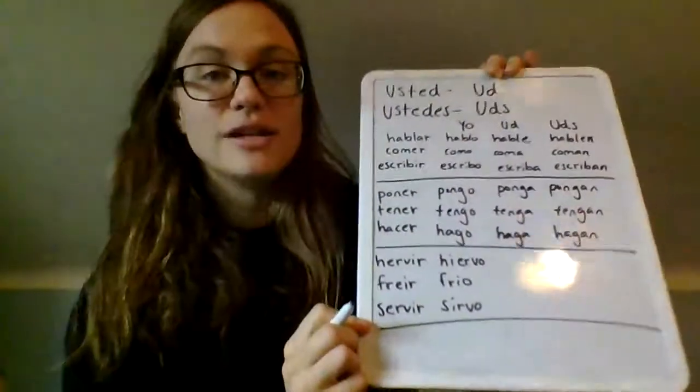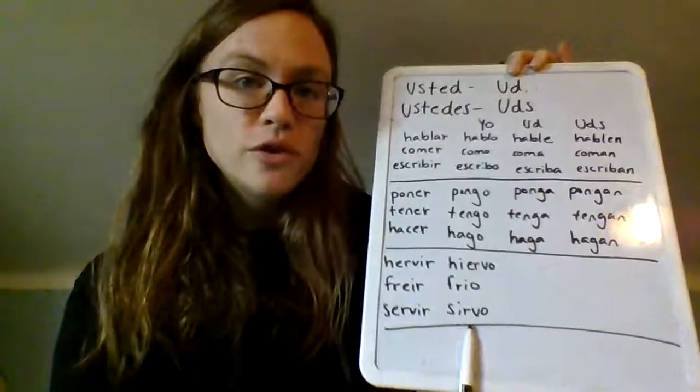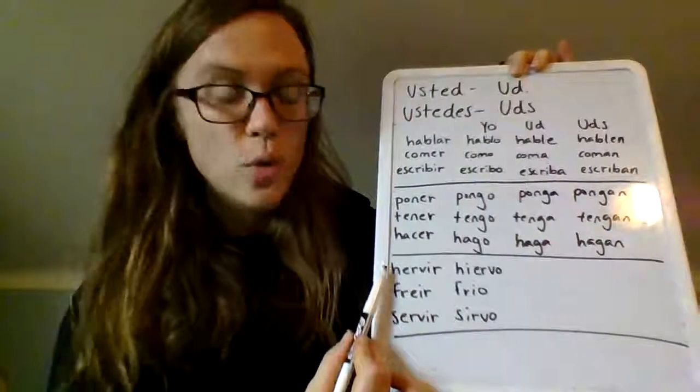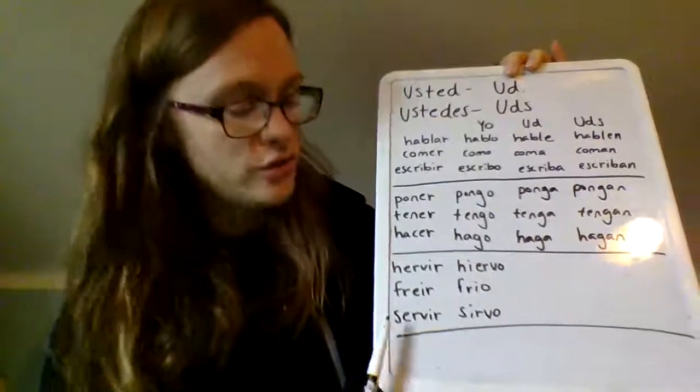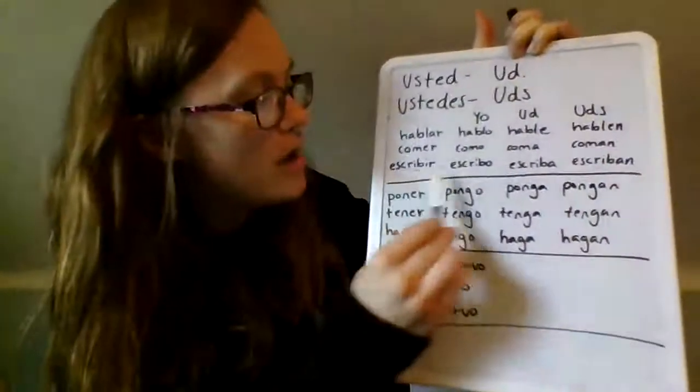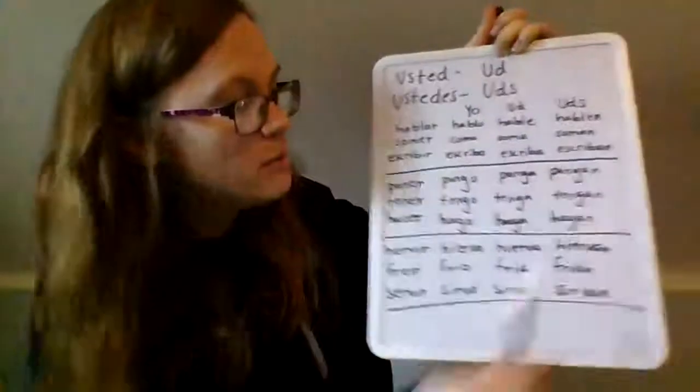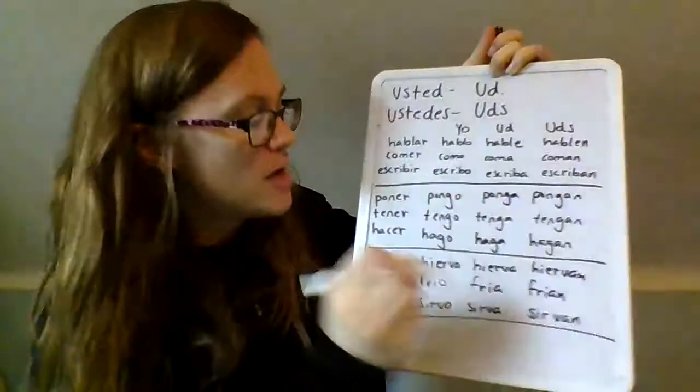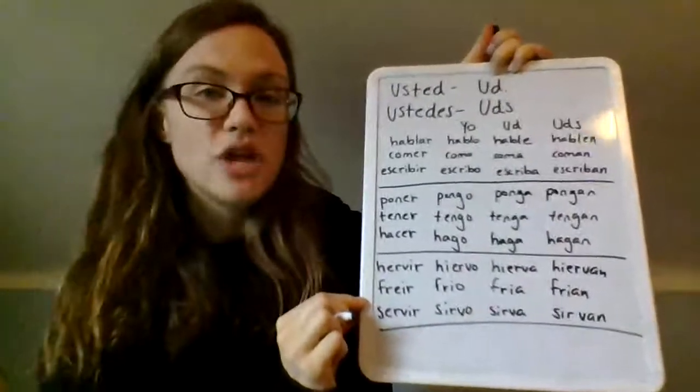Next, we have verbs that are stem-changing. It's helpful to put them in the yo form first so you can see the stem changes. They are all IR verbs, so we use the IR ending of A or AN for the command form. To command you to boil: hierva. You all: hiervan. To command you to fry: freya. You all: freyan. To command you to serve: sirva. You all: sirvan. We're still using the regular endings — just take note of any irregular yo form or stem change.